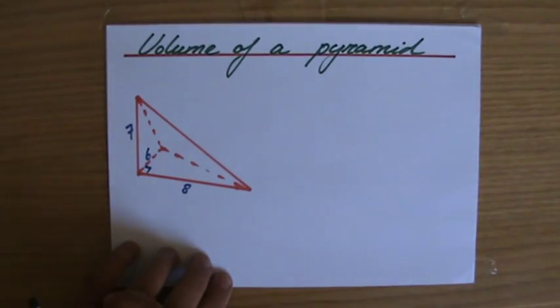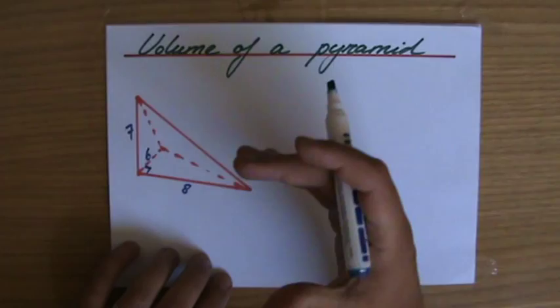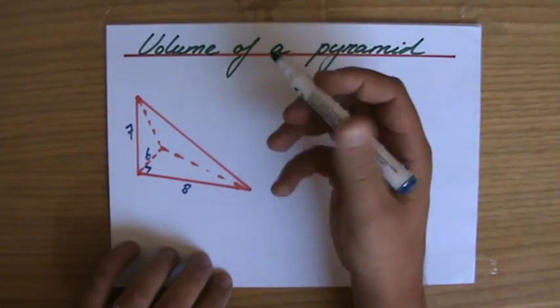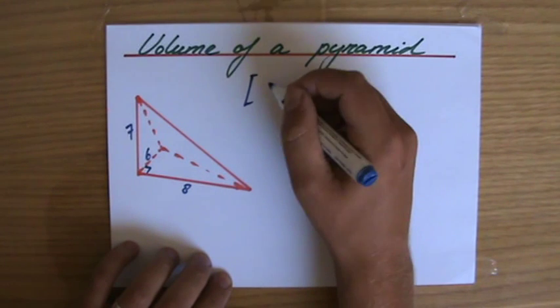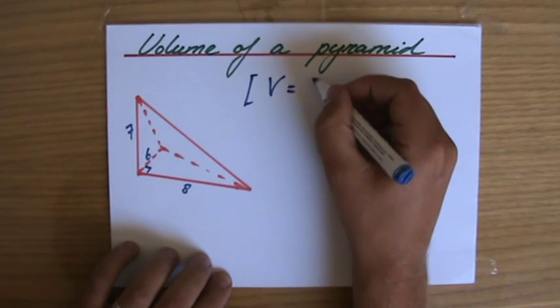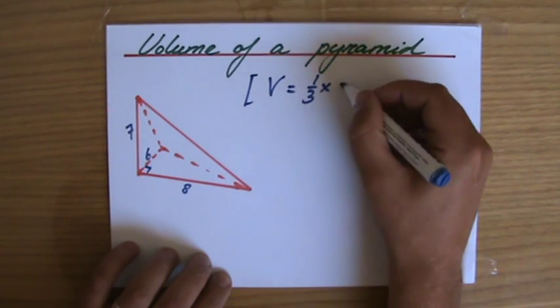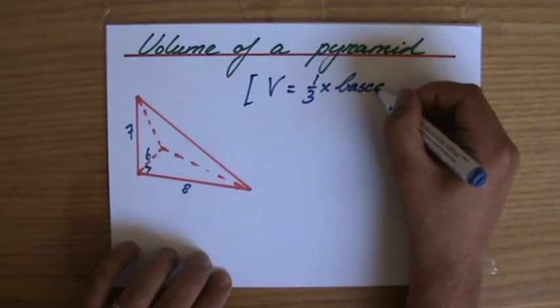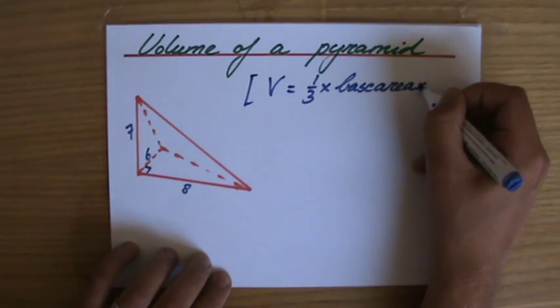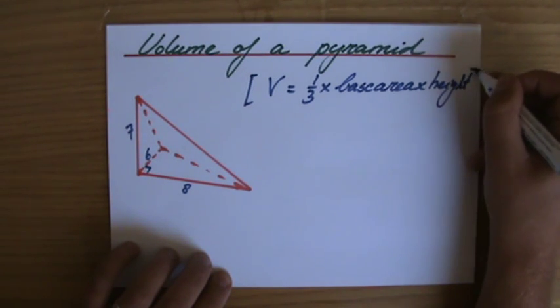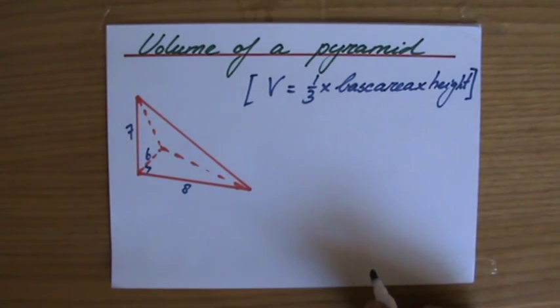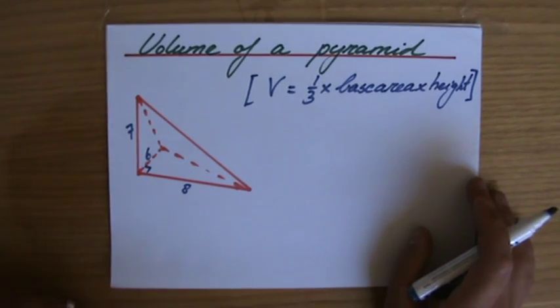And in these questions nowadays, unfortunately if you ask me, they give you the formula in the question. So they will tell you that the volume of a pyramid can be found by volume is a third times base area times the height. OK, so that formula is given in the question, but you still have to be able to work with it.